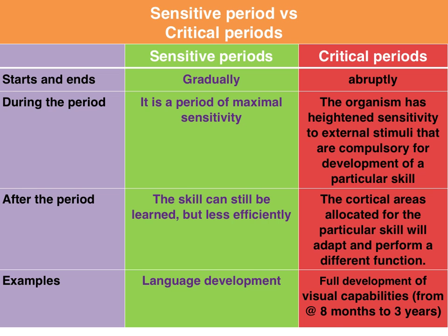In terms of differences between sensitive and critical periods: sensitive periods start and end gradually, as opposed to critical periods, which have an abrupt start and abrupt end. During a sensitive period there is maximal sensitivity to environmental stimuli, whereas a critical period is described as heightened sensitivity to external stimuli. After a sensitive period closes, learning can still occur but will be less efficient. After a critical period has elapsed, the cortical areas allocated for that skill will adapt and perform a different function.